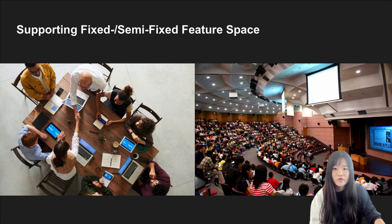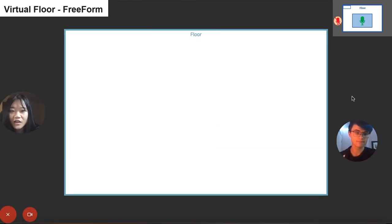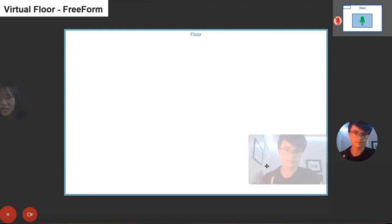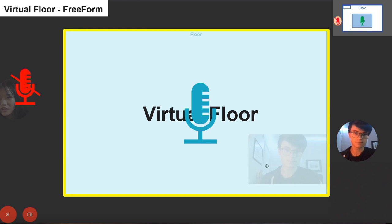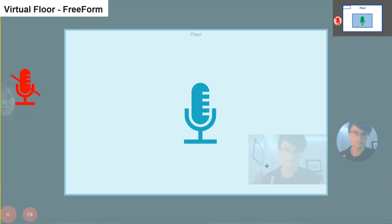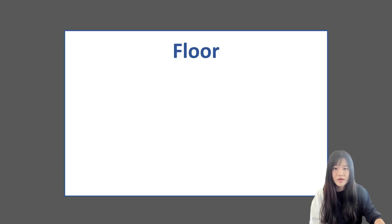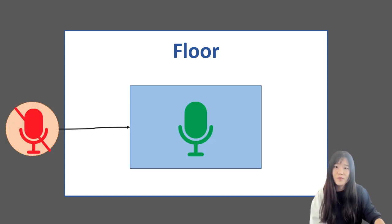In this work, we focus on the fixed feature space. As you can see from the video, both users are moving their videos from the peripheral area to the central area, which we named the virtual floor. The floor edge defines the control of unmuting and muting the microphone. The whole view is the same for everyone, so that everyone can be aware of their spatial relationship with each other. The virtual floor presents our first interaction concept, serving as the fixed feature space for users to be aware of others' intention to talk and define a boundary for managing conversations.